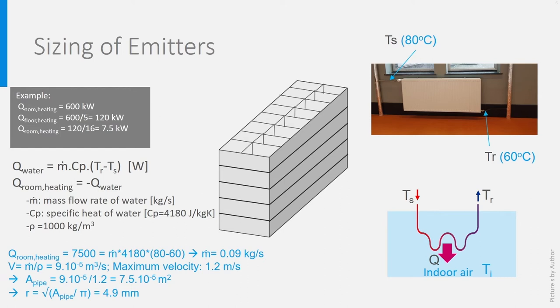We can then size the pipe. The volume flow rate m divided by ρ, the density of water, 1000 kg per cubic meter. So the volume flow rate is 0.09 divided by 1000, which is 9 × 10⁻⁵ meter per second, divided by the maximum velocity of 1.2 m/s. This delivers a cross-sectional area of 7.5 × 10⁻⁵, leading to a radius of less than 5 millimeters, a diameter of less than 1 centimeter.